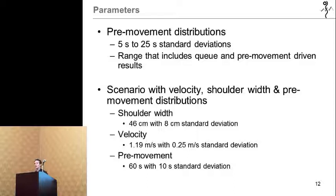Finally, when all three occupant characteristics were applied with normal distributions, they were given a shoulder-width distribution to incorporate a range similar to Predtechenskii and Milinskii design values, a velocity seen in the NIST report, and pre-movement with a 10-second standard deviation.